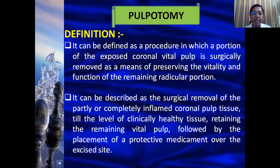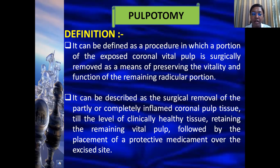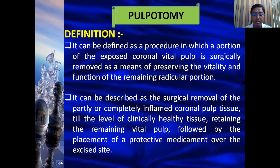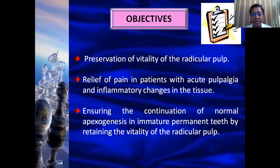Pulpotomy can be defined as a procedure in which the exposed coronal vital pulp is surgically removed as a means to preserve the vitality of the remaining pulp in the radicular dentin. It can also be described as a surgical procedure wherein the partly or completely inflamed coronal pulp is removed down to the level of healthy pulp tissue, followed by placement of a protective medicament over the excised tissue. The objectives of pulpotomy are to preserve the vitality of the radicular pulp, relieve pain in patients with acute pulpalgia, and ensure the continuation of apexogenesis — that is, normal root development in immature permanent teeth.